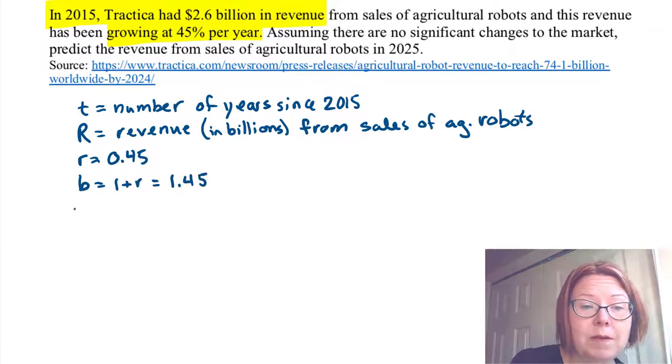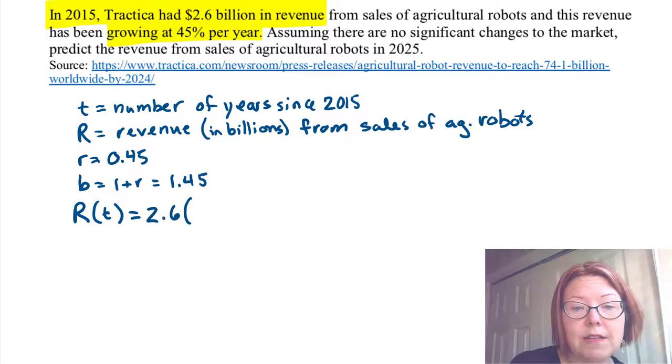Our model would then be capital R(t) equals the initial value, which was 2.6 times (1.45)^t. So there's our model.